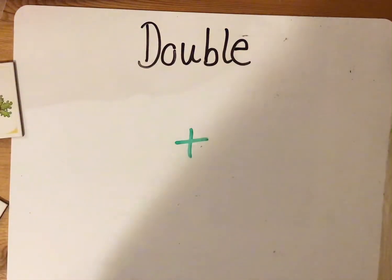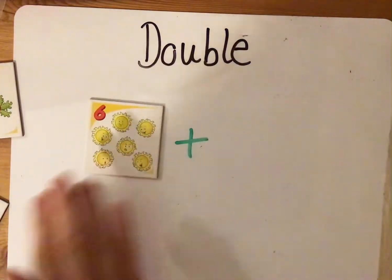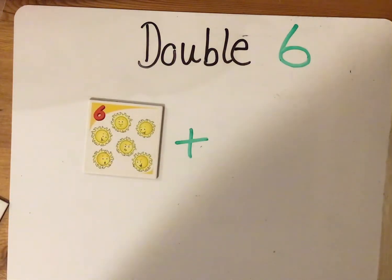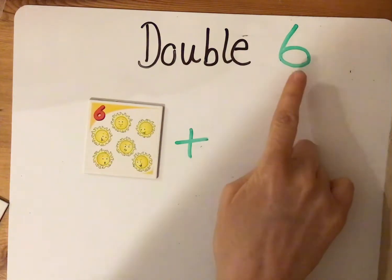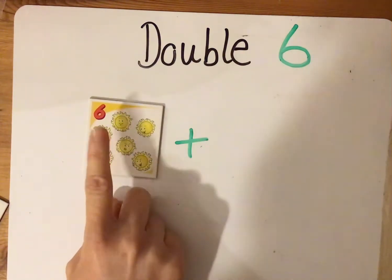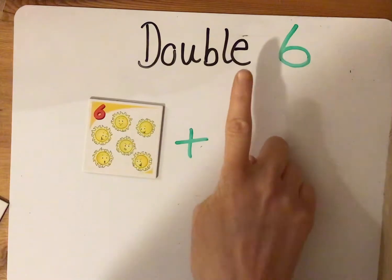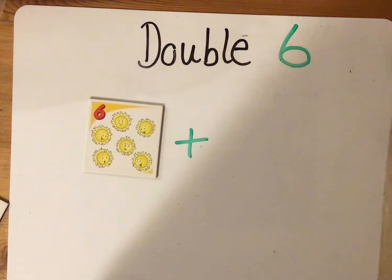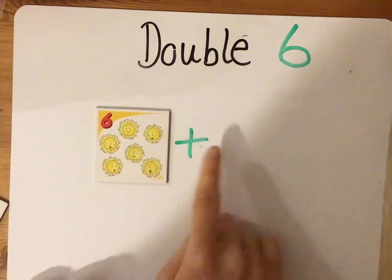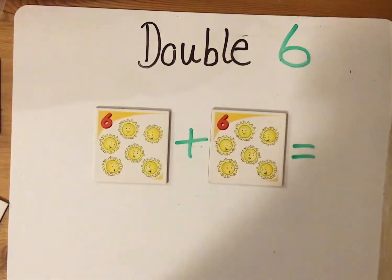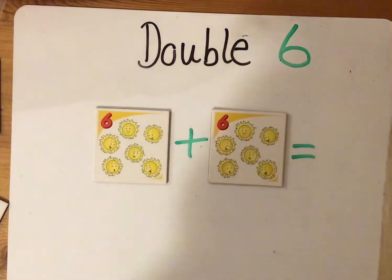I would like you to try double six on your own. So I want you to see if you can find the answer to double six. Now remember, if we want to find out what double six is, what number do we need to add to six to find the answer? We're adding six again because when we double a number it means that we add the same number again. So we need to add another six. Mums and dads, if you pause the video now and let the children have some time to find the answer to double six, then when they think they've found the answer, play it again and I will show you the answer.